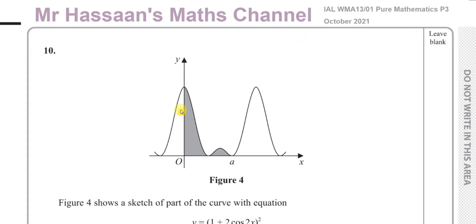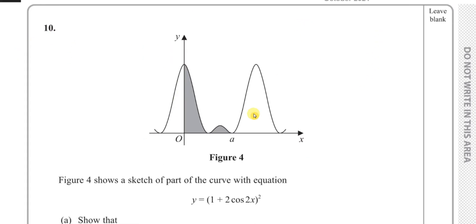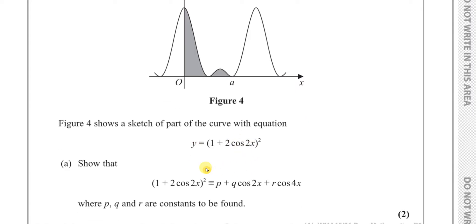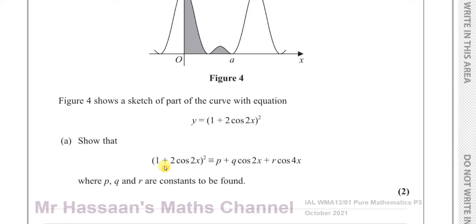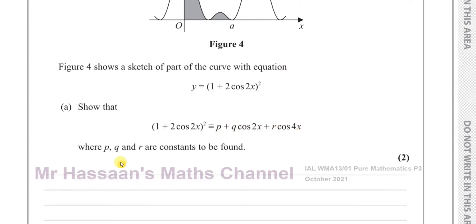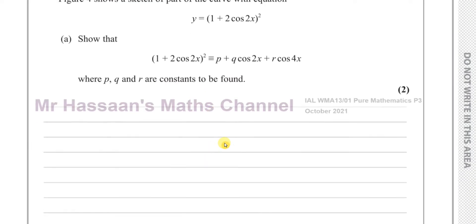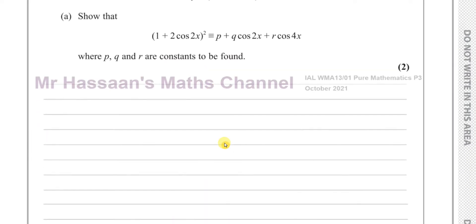This question is about a curve with the equation y = (1 + 2cos2x)². We've got to show that this simplifies or expands to become p + q·cos2x + r·cos4x, where p, q and r are constants to be found. So we've got to take this equation and express it in that particular form.